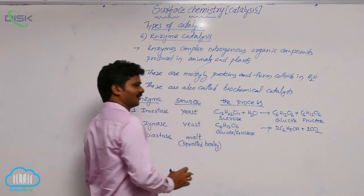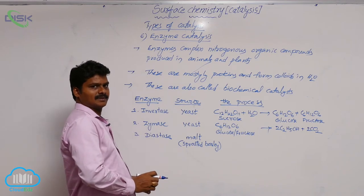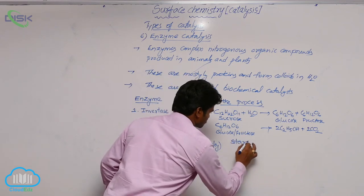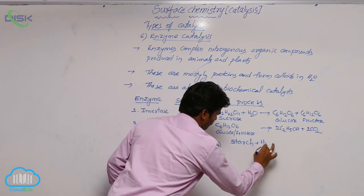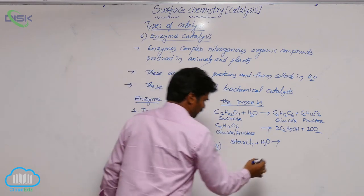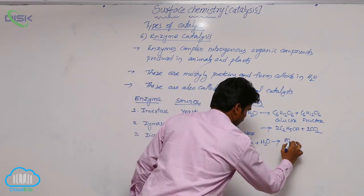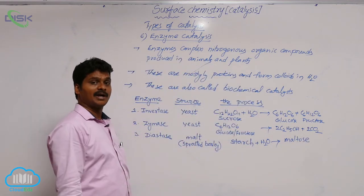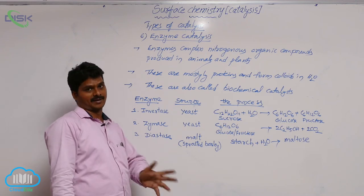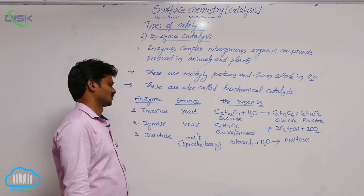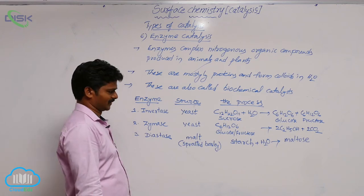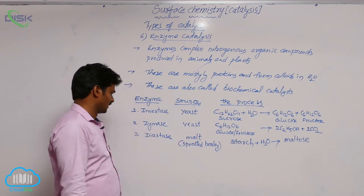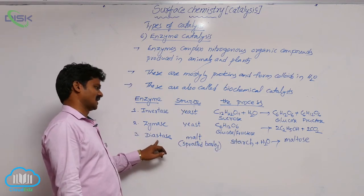Starch on hydrolysis converts into maltose. Maltose and sucrose have the same molecular formula: C12H22O11. In this conversion of starch into maltose, diastase is used as the enzyme.